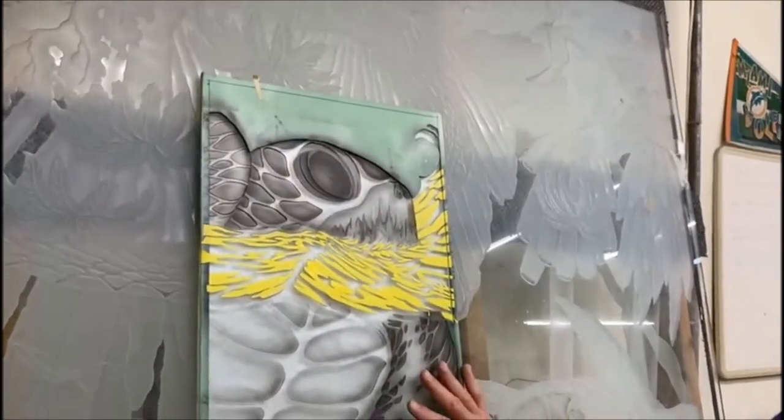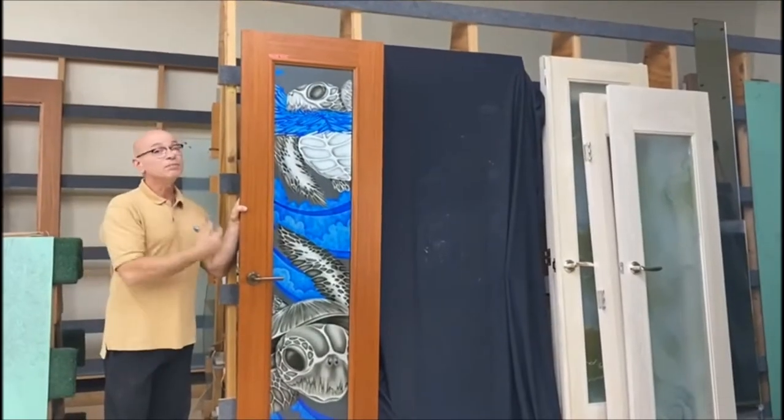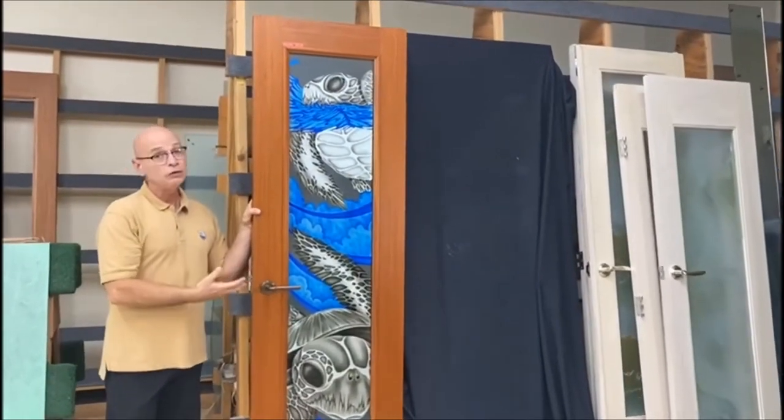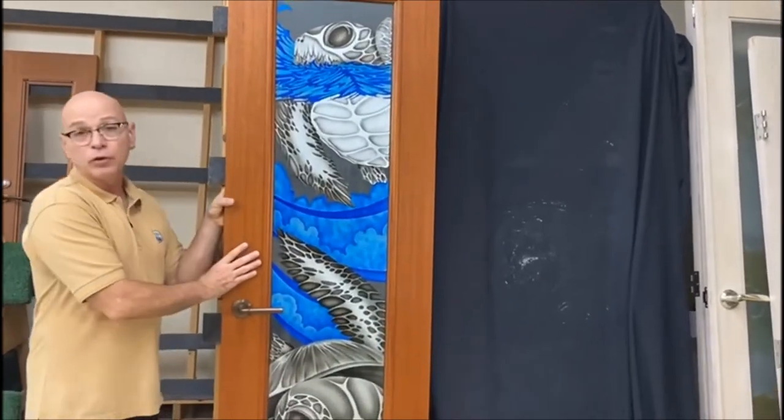So these are the bedroom doors. So this is a completion of one of nine doors that we're doing on this yacht. This is a bedroom door, like I told you.